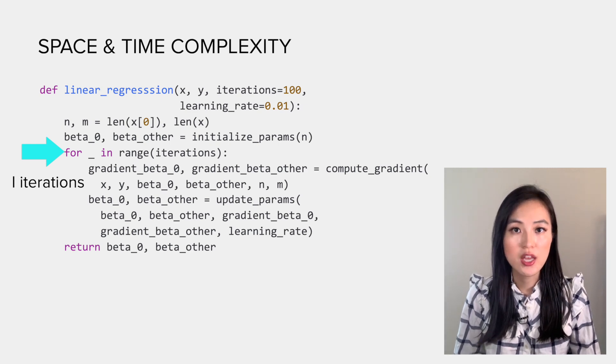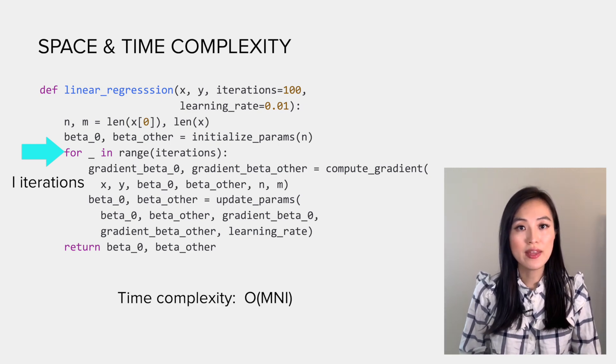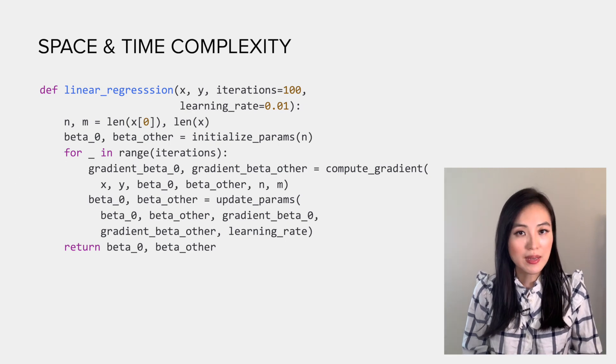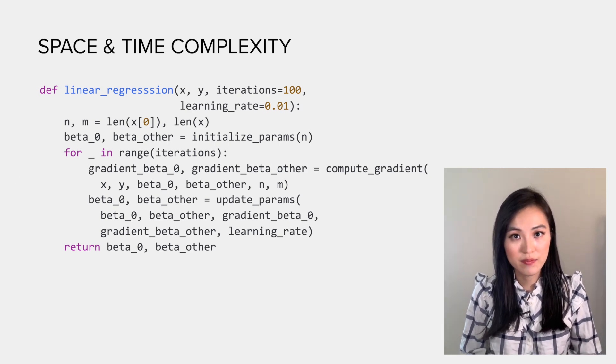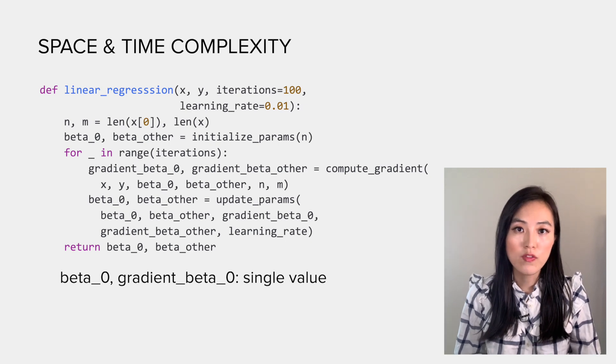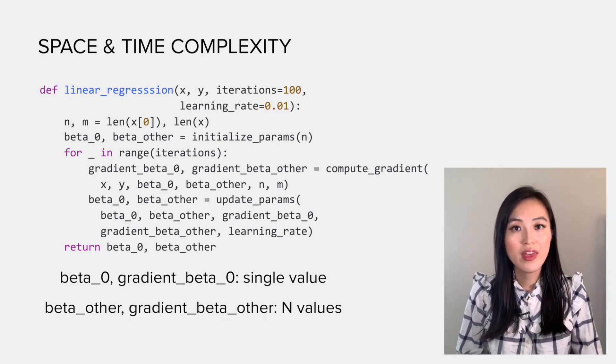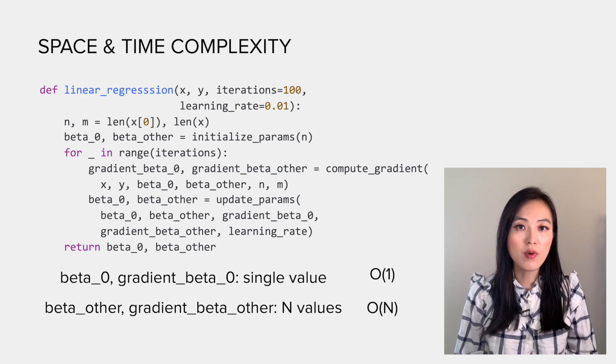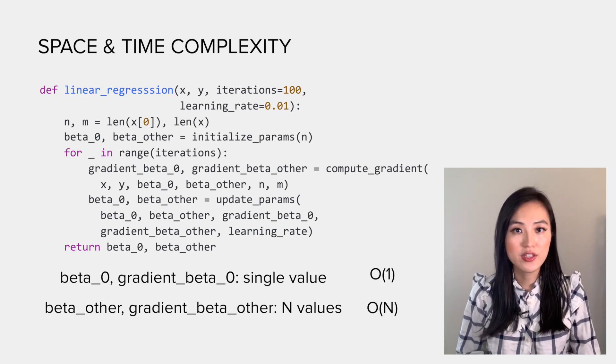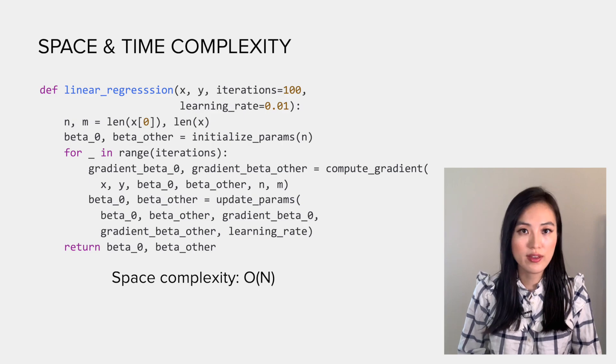Clearly, the bottleneck is on computing gradients. So if we end up updating betas i times, or there are i iterations, the total time complexity is O(mni). For the space complexity, we need to check what are the intermediate variables we have created. We have created a variable for beta_0 and a list of n elements to hold other beta values. The former is O(1) and the latter is O(n), so the space complexity would be O(n).